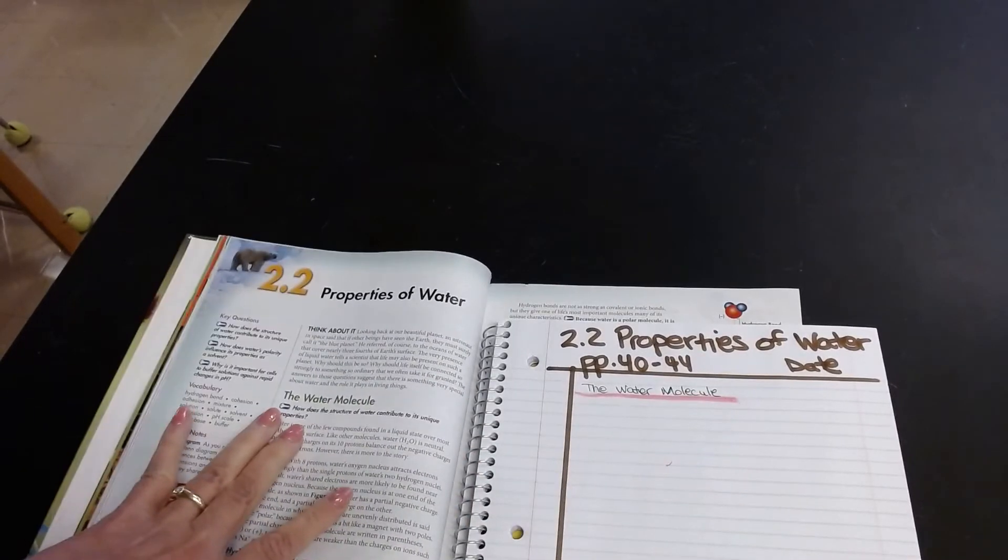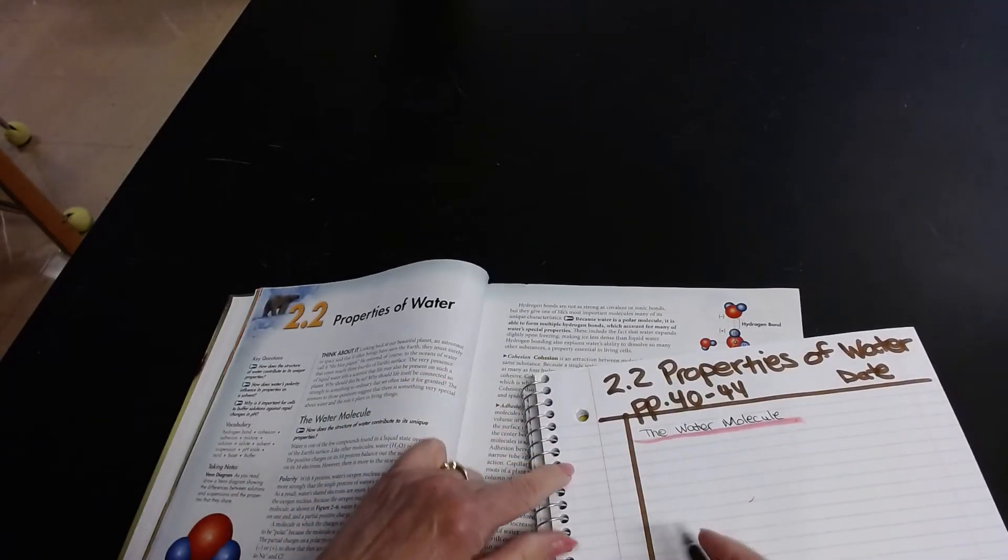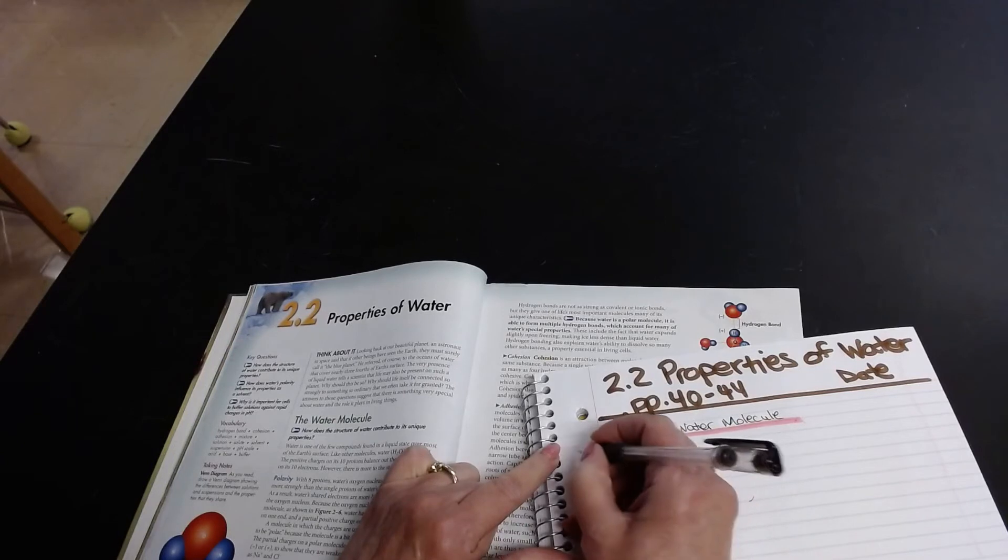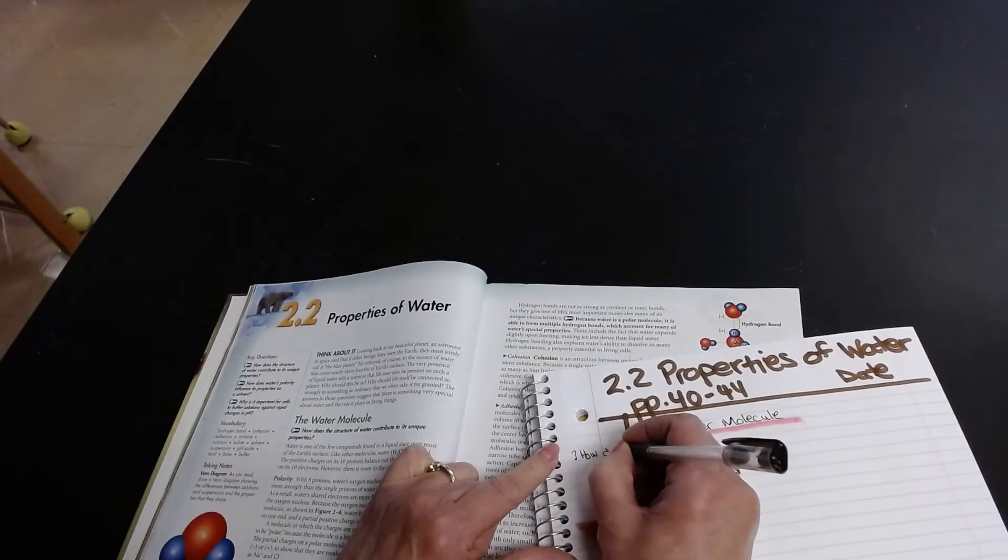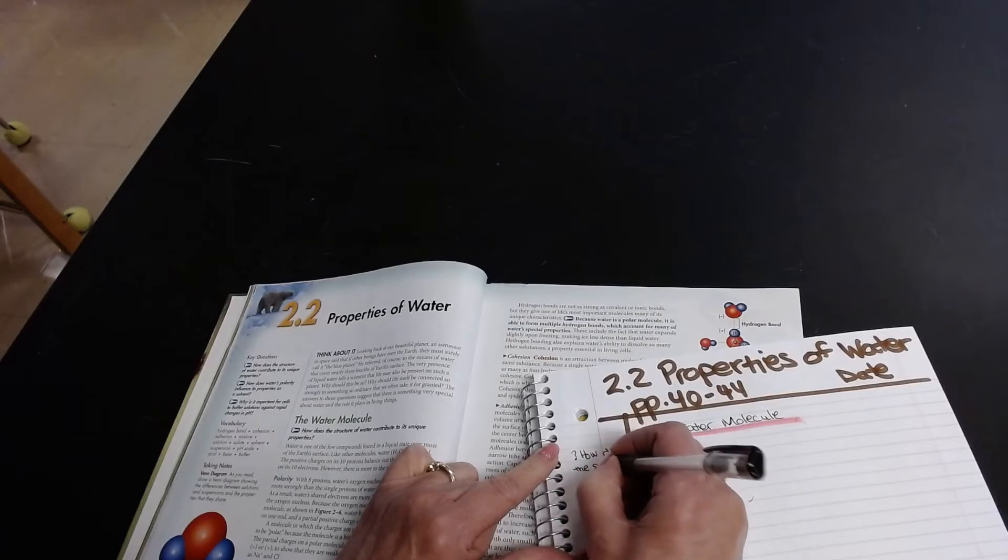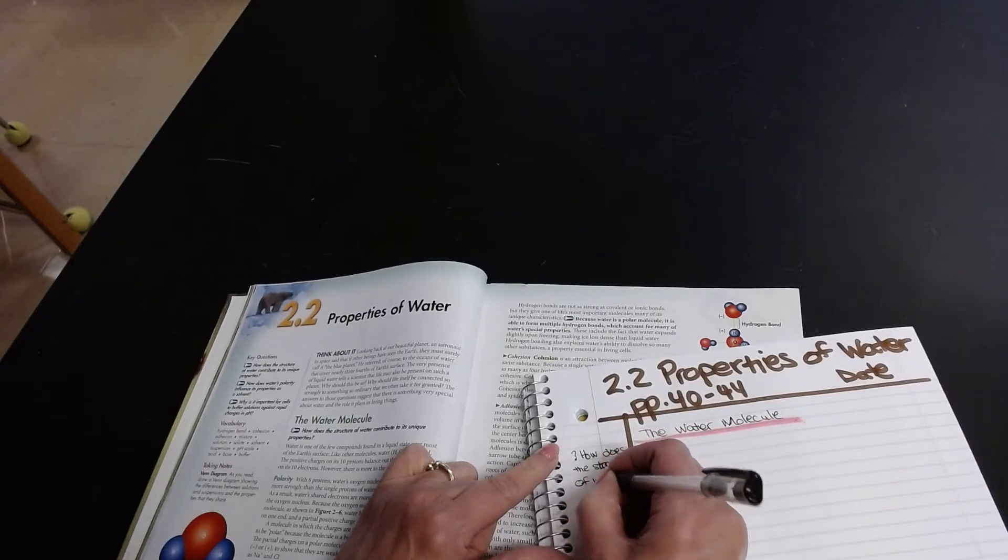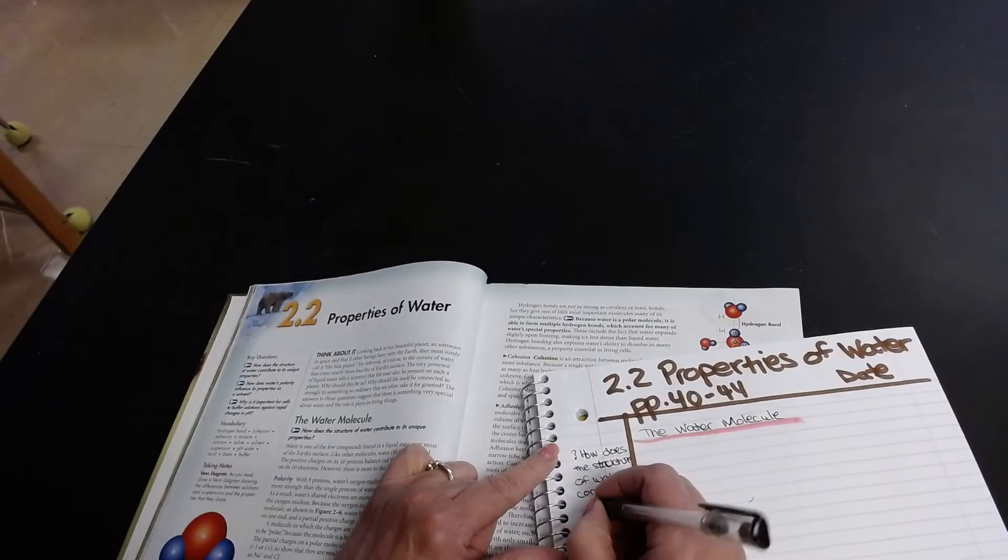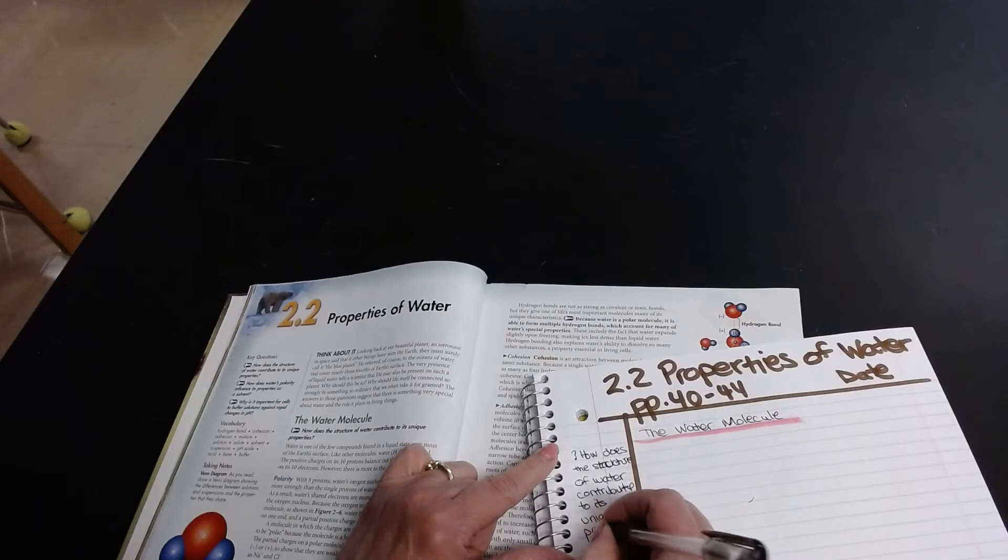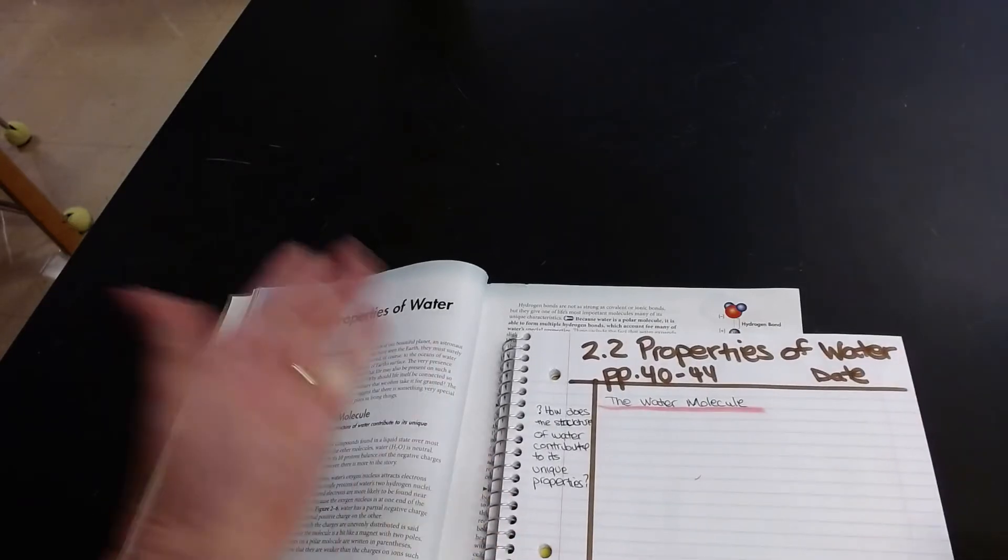Then right below the water molecule in the text is a key question. So I'm actually going to put that question over here. Because this is information I know I have to remember for the test. So I'm going to put a question mark so I don't forget it's a question I'm asking. And I'm going to write how, again I'm taking it directly out of the text, does the structure of water contribute to its unique properties. And I'm writing fairly large. I know that. Again, I'm writing for the video. Question mark again.